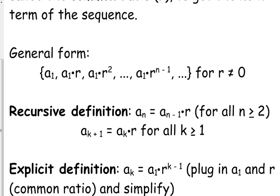Recursive definition. Remember, this is the one that's not really as helpful, but sometimes this is the only way you can express something. a sub n, your current term, is equal to a sub n minus 1, that's the previous term, times the common ratio. Or you can look at it from the perspective of a sub k plus 1 - that's the next term - is equal to a sub k, your current term, times the common ratio. Same difference, just different perspectives.